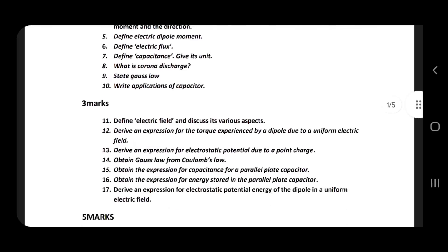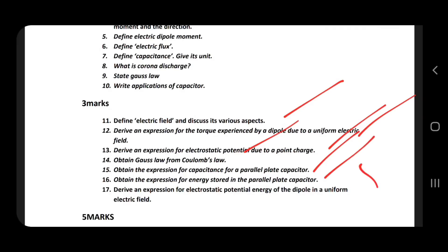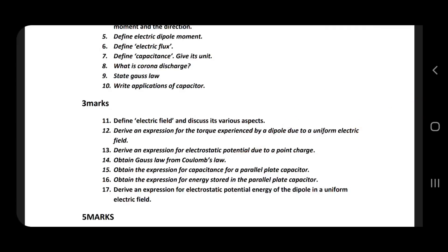Derive electric field and discuss its various aspects. Define electric field, derive torque, electric potential due to a point charge, Coulomb's law — this is very important. Capacitance of the parallel plate capacitor, energy storage — very very important. 5-mark: potential due to a point charge, energy stored, potential energy of dipole in a uniform electric field.